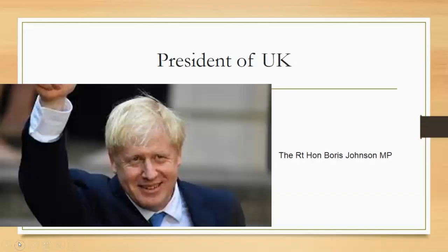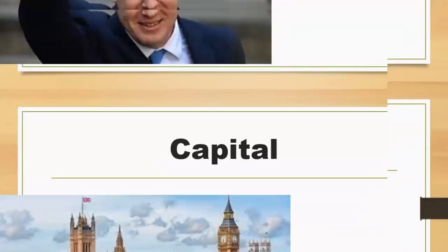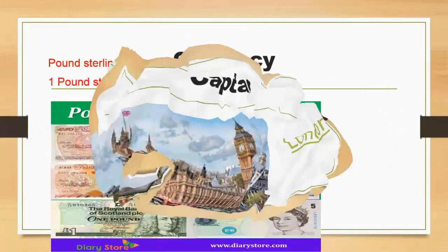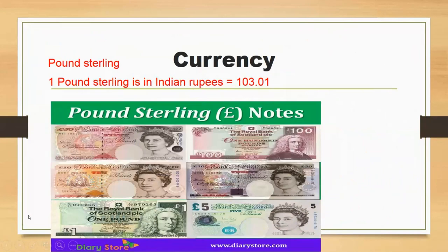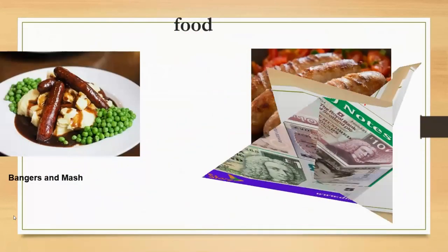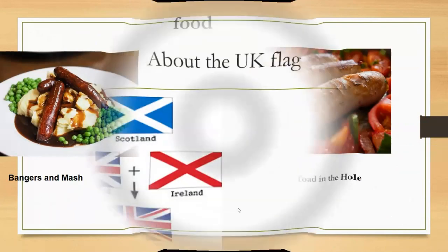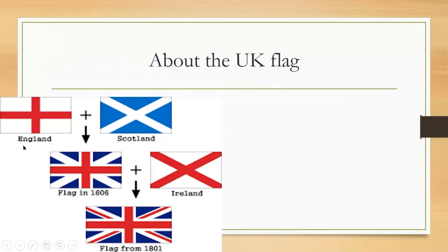This is the flag of the UK. The president of the UK — Boris Johnson, MP. The capital of the UK is London. The currency is pound sterling; one pound sterling in Indian rupees is 103.1 rupees. The food includes bangers and mash. About the UK flag: the England flag and the Scotland flag were combined in 1606.